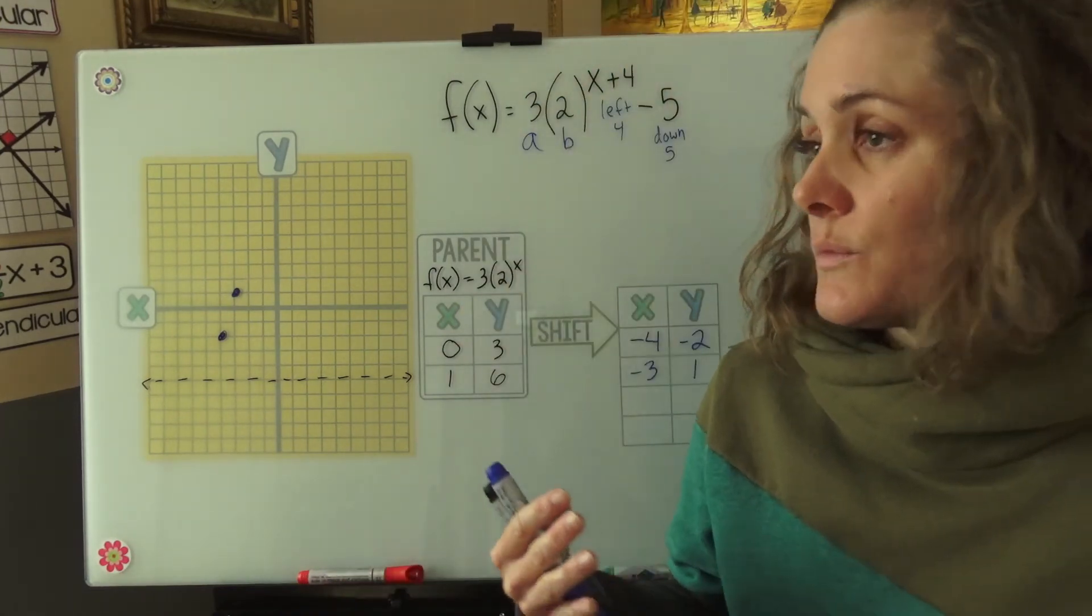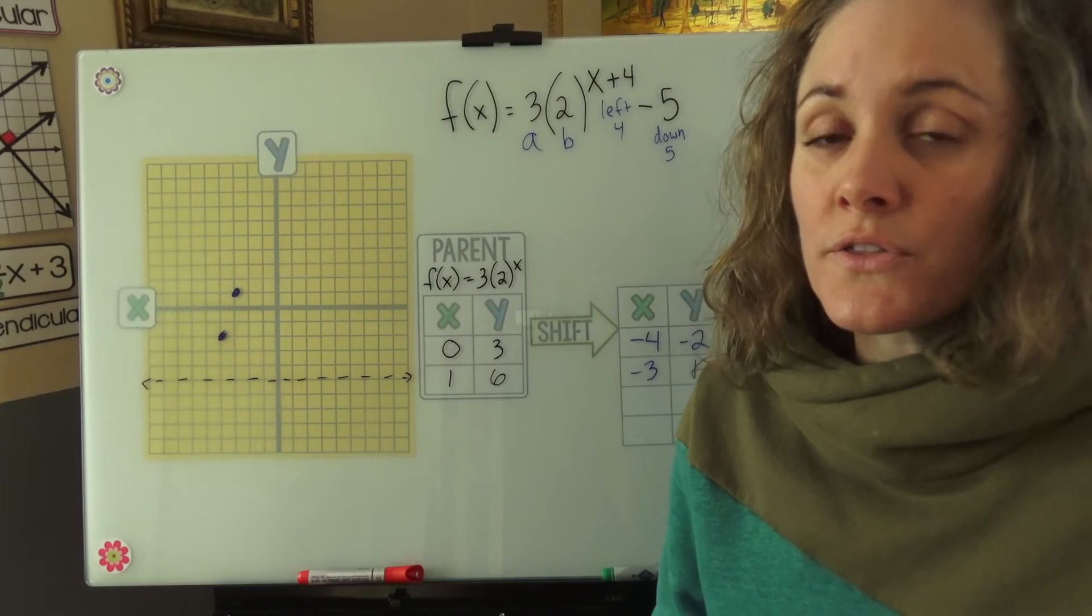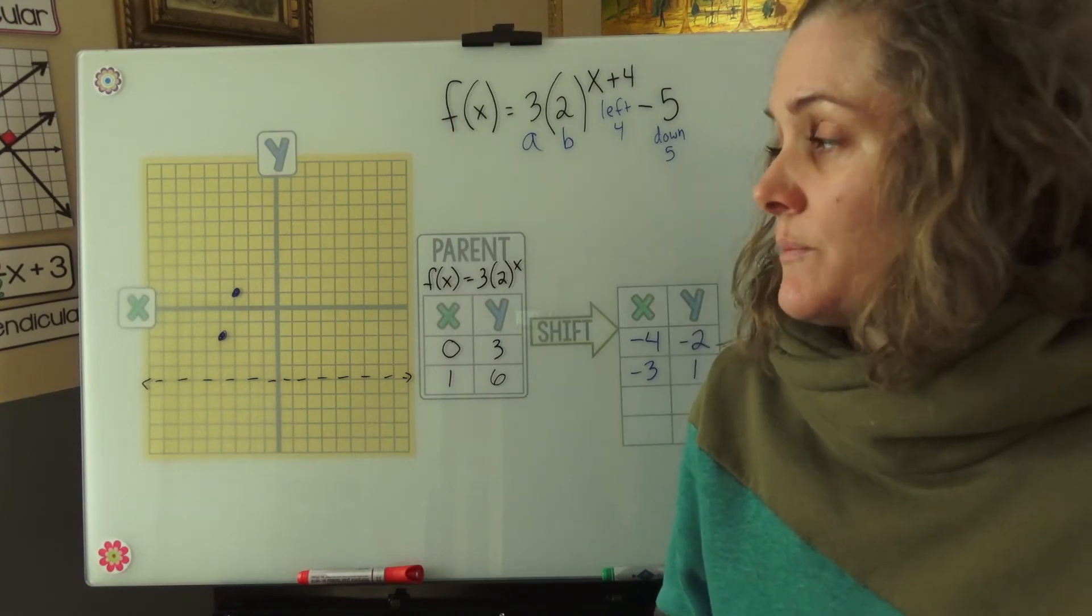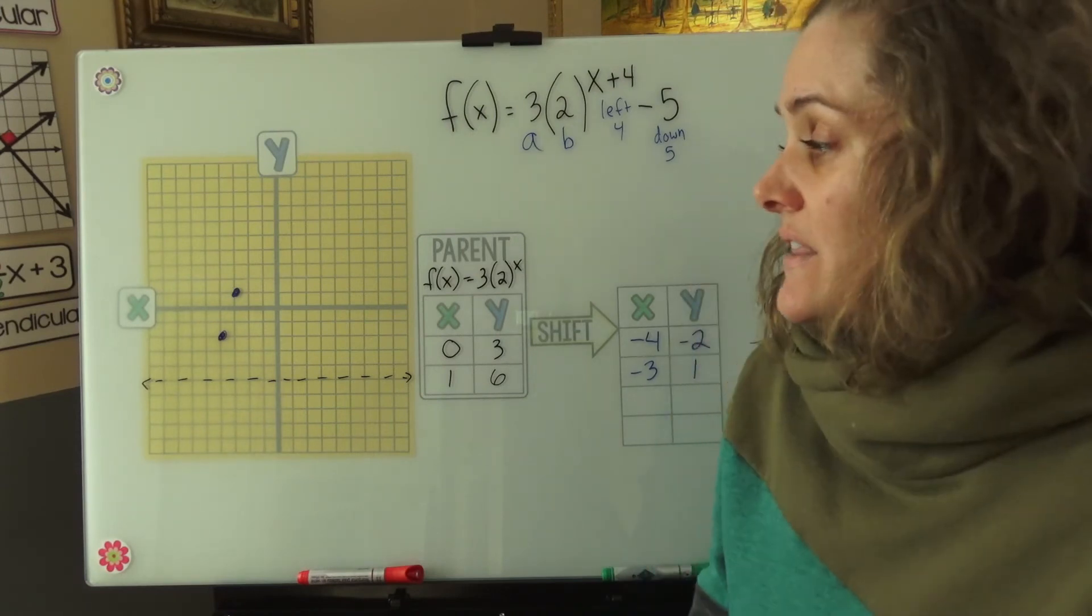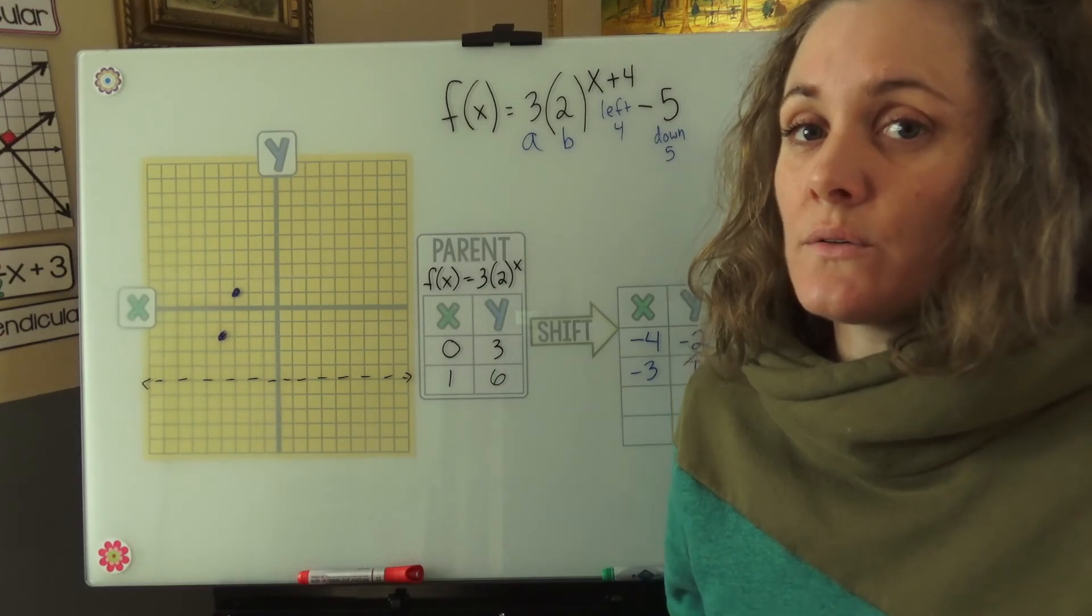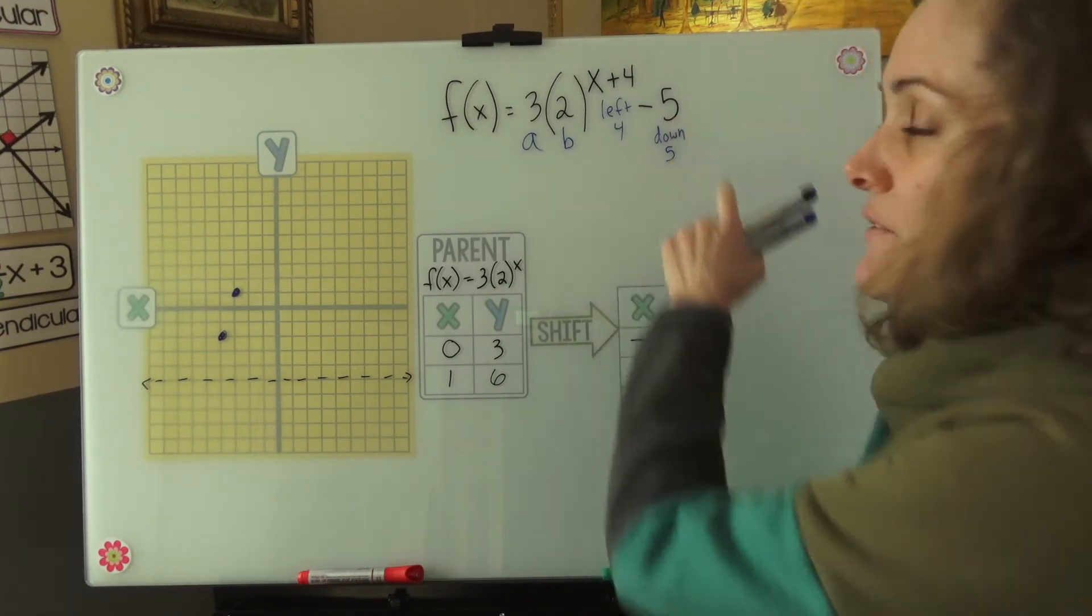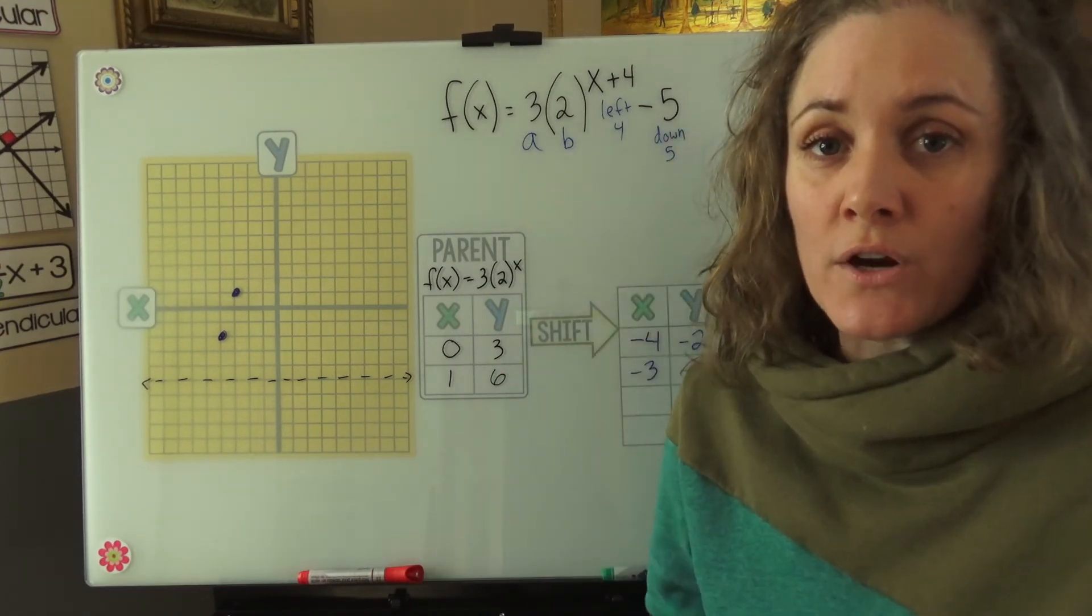They're cool when you're studying exponential growth, wealth accumulation over the years, population growth. And they never quite hit 0. Now in our case, they're never going to quite hit negative 5 because that's the way our graph shifted.